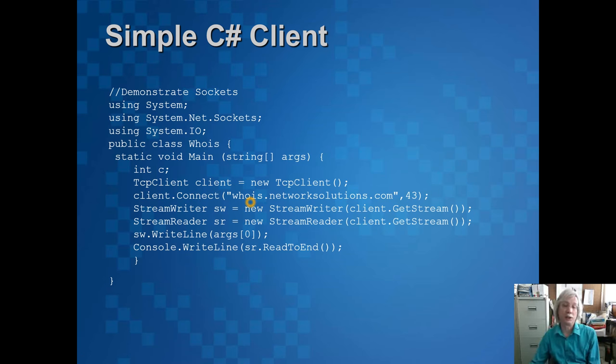This is connected to a Whois server which is a protocol that works over port 43. Then we can create a StreamWriter to handle the stream. From the client we can get the stream, do a StreamWriter and a StreamReader to that stream.